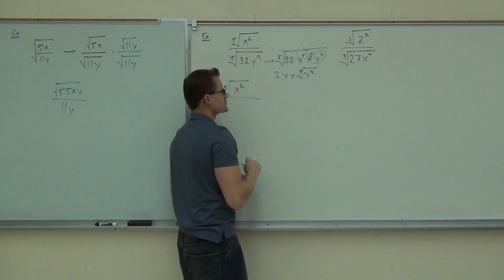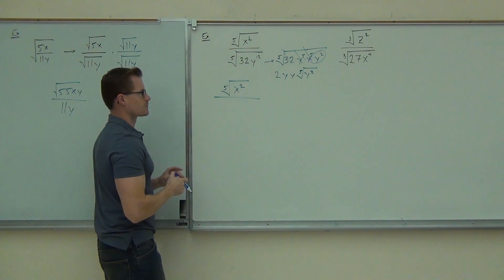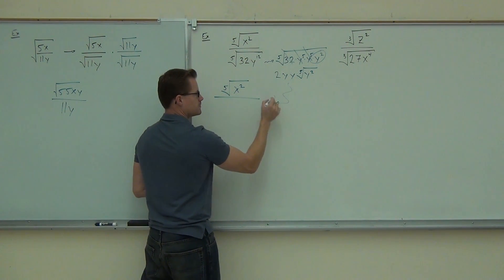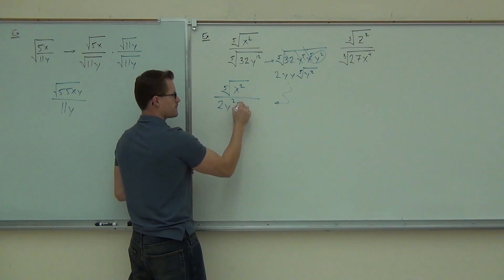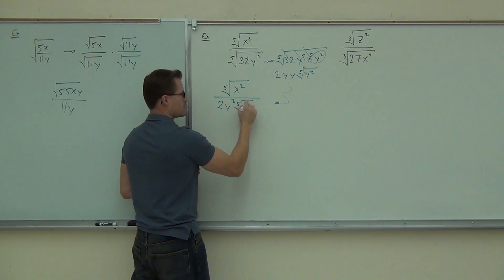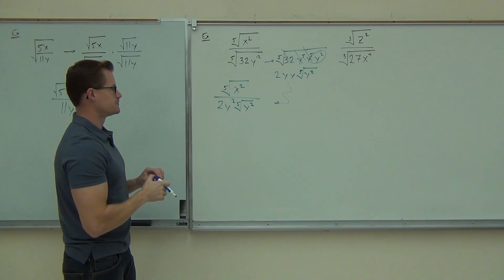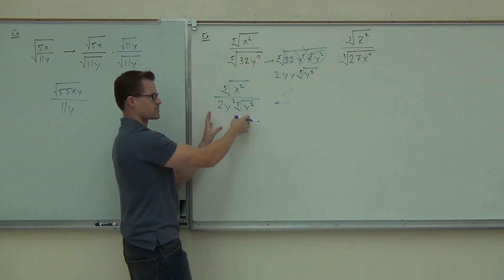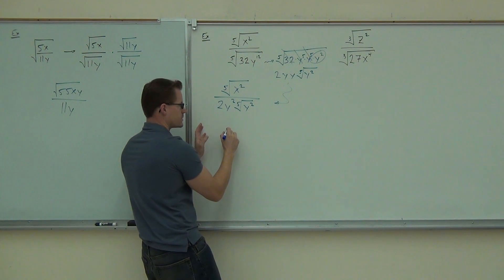You get a 5th root of y squared — don't lose that 5th root. So in our expression here we'll get 2y squared times the 5th root of y squared. I'm just going to rewrite this right here so I can use our rationalization later.